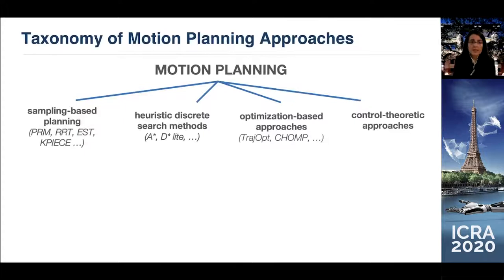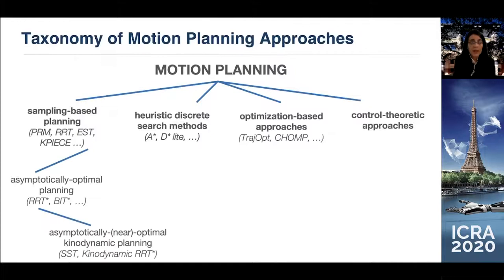I would broadly say that we have solutions based on sampling. There has been an explosion of sampling-based planners — PRM, RRT, EST, for those who recognize the acronyms. We also have heuristic and discrete search methods like A* and D* Lite that can work very well in certain scenarios. Optimization-based approaches have also made inroads recently, and we have control-theoretic methods that can be applied to this problem.